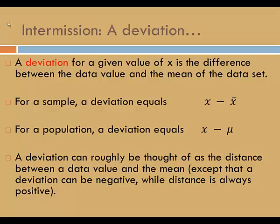Let's pause for a minute to discuss deviations. A deviation for a given value of x is the difference between the data value and the mean of the data set. For a sample, a deviation equals x minus x-bar. For a population, a deviation equals x minus mu. A deviation can roughly be thought of as the distance between a data value and the mean, except that a deviation can be negative, while distance is always positive.